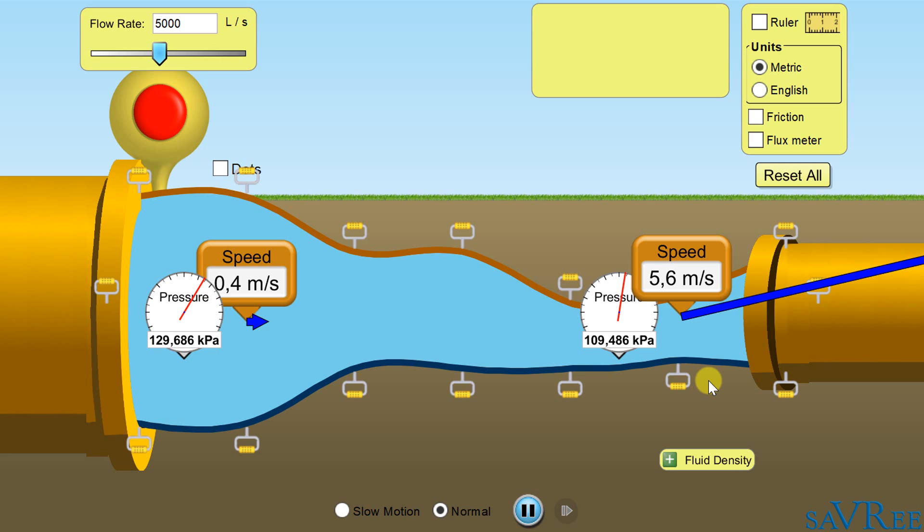So a quick recap. If the flow path becomes larger, the speed reduces and the pressure increases. If the flow path becomes smaller, the speed increases and the pressure reduces. And you can see we've got quite a lot of pressure reduction when we compare both the left and the right. So let's now go back to our impeller and apply Bernoulli's principle in order to figure out how it works.